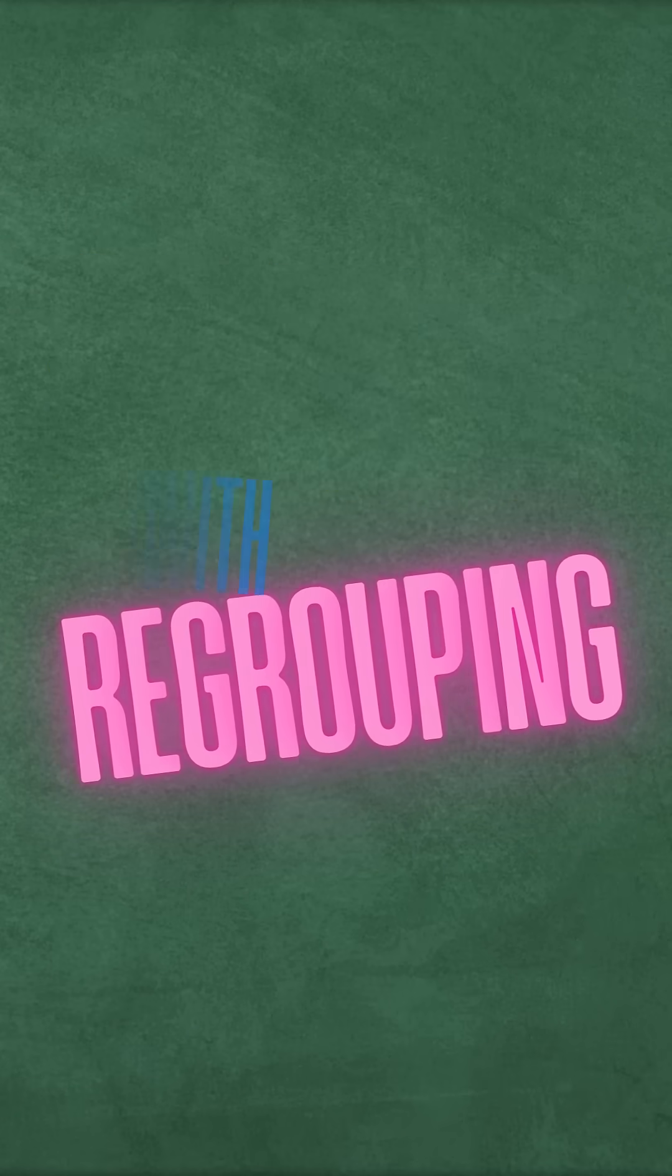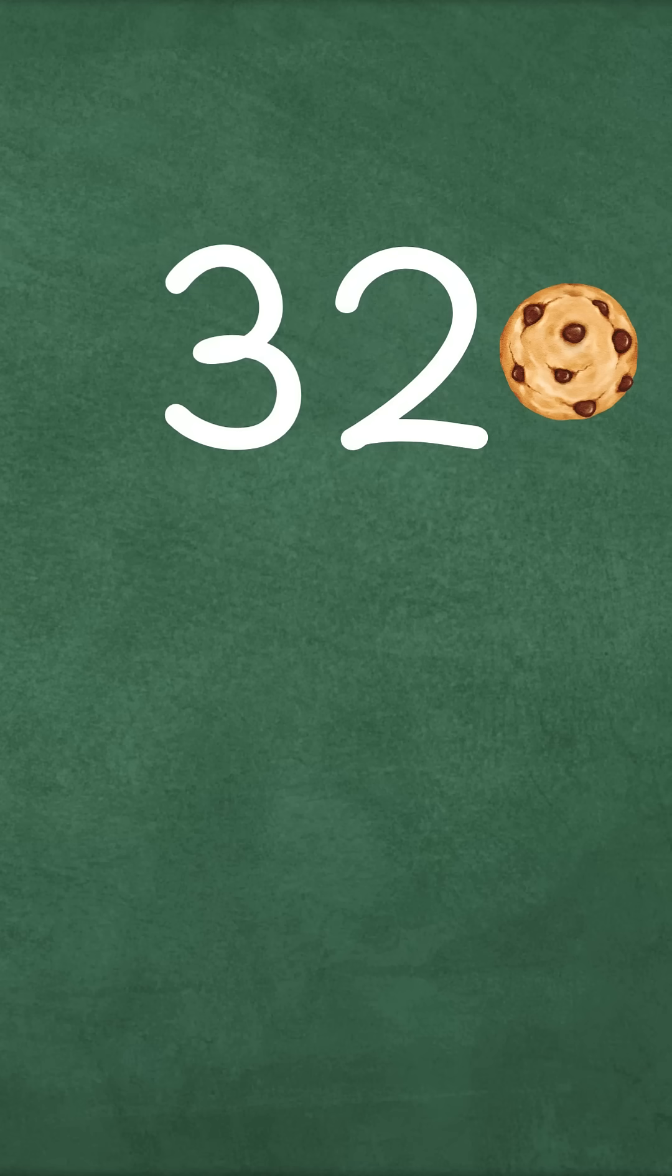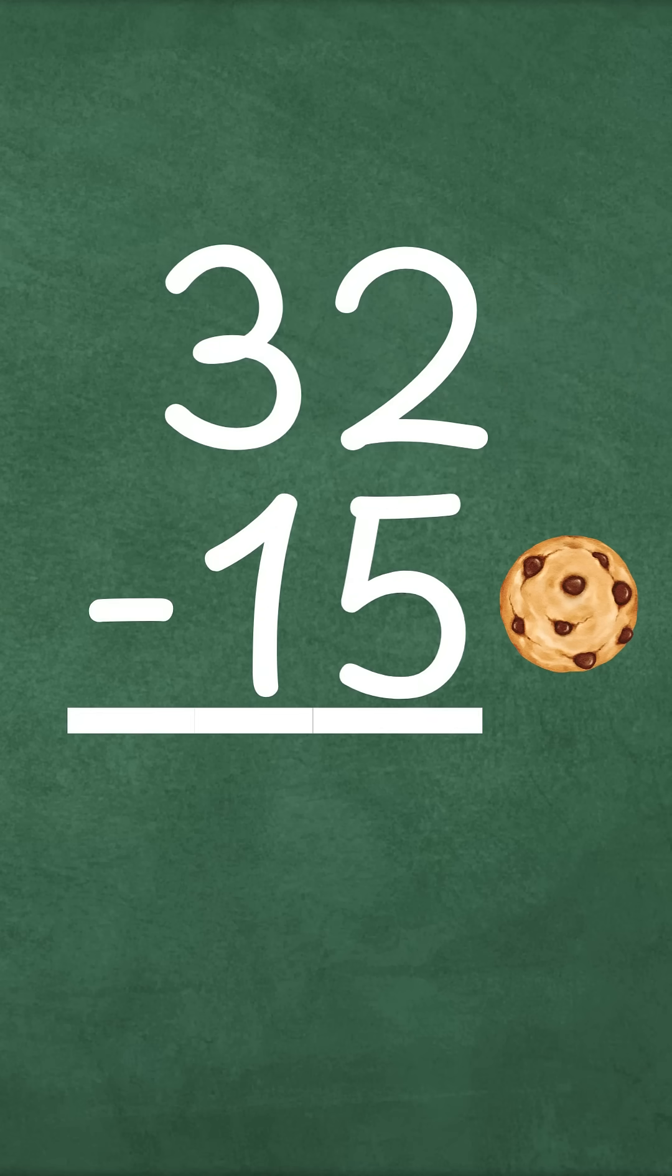Subtraction with regrouping. Imagine you have 32 cookies and you would like to give a cookie to 15 of your friends. How many cookies will you have left?